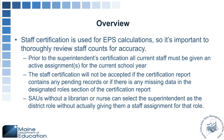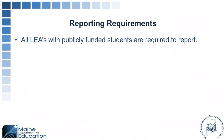Staff certification is used for EPS reporting, and it is important to thoroughly review all staff counts for accuracy. Prior to superintendent certification, all current staff have to have an active staff assignment in NEO Staff. Everyone was rolled over to pending status on July 1st — those will all have to be moved to active in order to count on your reports. Staff certification will not be accepted if it contains any pending records. Districts without a librarian or nurse can have their superintendent selected for those district roles. All LEAs with publicly funded students are required to report.